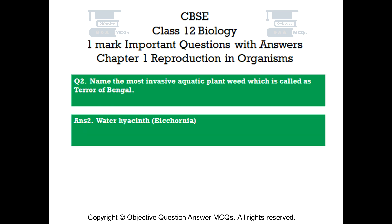Question number 2: Name the most invasive aquatic plant weed which is called the Terror of Bengal. Answer number 2: Water Hyacinth, Eichhornia.